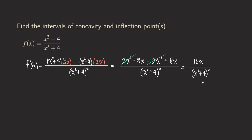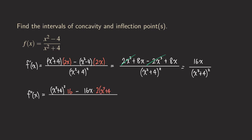So our first derivative is 16x over x-squared plus 4 quantity squared. To get the second derivative, we take the derivative of the first derivative using the quotient rule again. Copy down the bottom function, x-squared plus 4 quantity squared, times the derivative of the top, which is 16. Then minus, copy the top function 16x, times the derivative of the bottom. Using the general power rule and chain rule, we bring down the 2, getting 2 times x-squared plus 4, times 2x. The denominator becomes x-squared plus 4 to the fourth power.